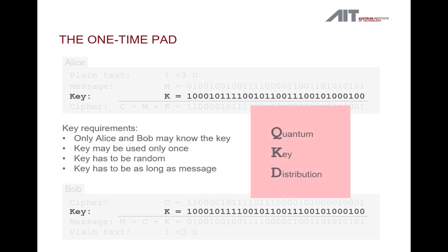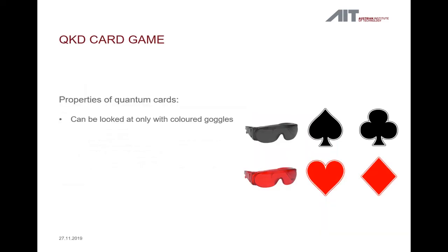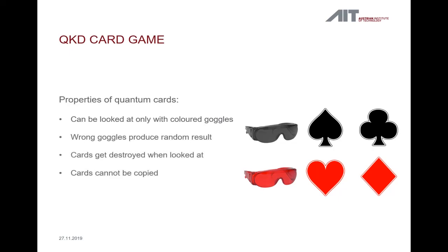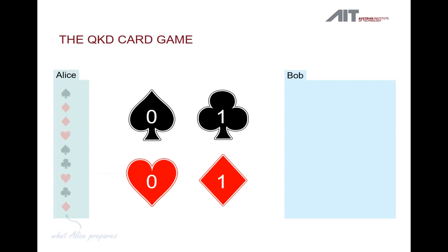But how does it work? Let's play a quantum card game. Quantum playing cards come in four symbols, just like normal playing cards, but they have some other special properties. The most important property is that you can only identify a symbol correctly if you happen to wear goggles of the appropriate color. Now, Alice shuffles a deck of quantum cards to bring them into random order and assigns a binary value to each card.